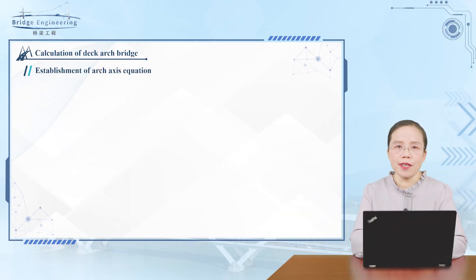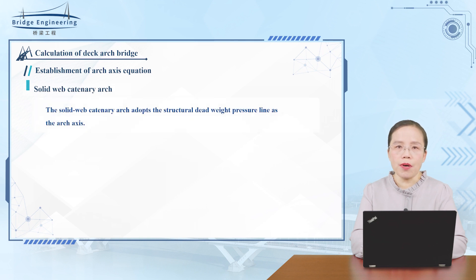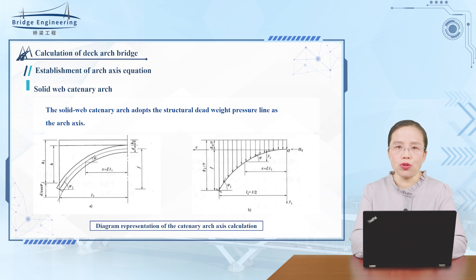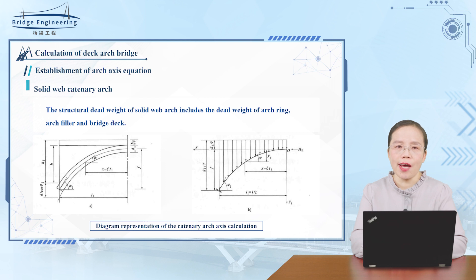Establishment of arch-axis equation. Solid-web continuous arch. The solid-web continuous arch adopts the structural deadweight pressure line as the arch-axis. The structural deadweight of a solid-web arch includes the deadweight of the arch ring, arch filler, and bridge deck. Its distribution is shown in the figure. The arch-axis equation is derived under the action of the deadweight of the structure, as shown in the figure.